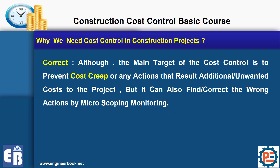Cost control can also correct actions. The main purpose of cost control is to prevent the project from exceeding the budget. But you execute some work, then you monitor and evaluate the progress, and if you find that the cost performance is not doing well, you need to correct that action. So cost control will prevent, give information, and then you can take corrective action.